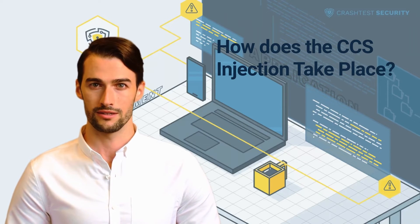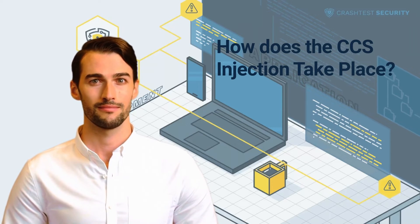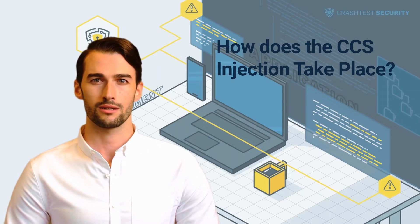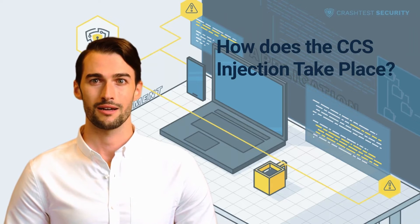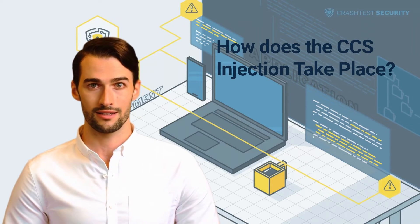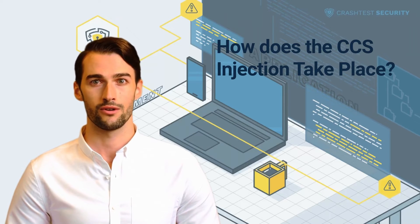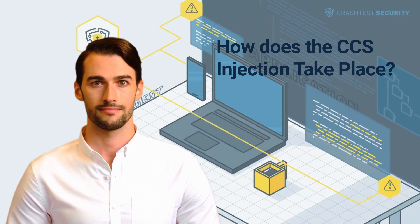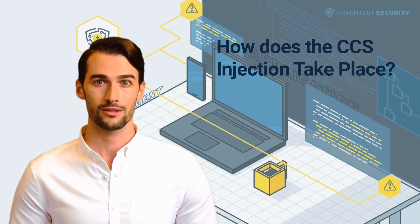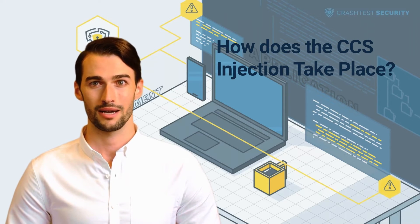This would lead to desynchronization due to the CCS request breaking the standard order of the handshake. Without the vulnerability, such desynchronization would lead to the connection attempt being terminated. As part of the CCS injection, man-in-the-middle attackers could interfere with the handshake parameters by sending a CCS request to the server and the client. This made the vulnerable versions issue and use a pre-master secret key with zero length. Based on this zero-length pre-master key, session keys are agreed upon, effectively breaking the encryption of the session and making it vulnerable.